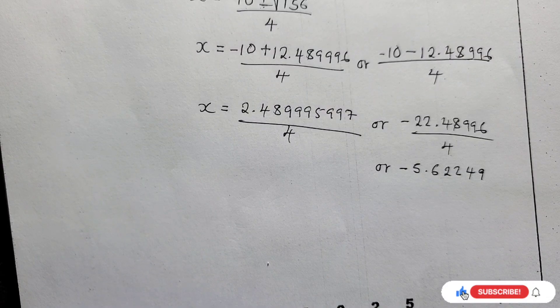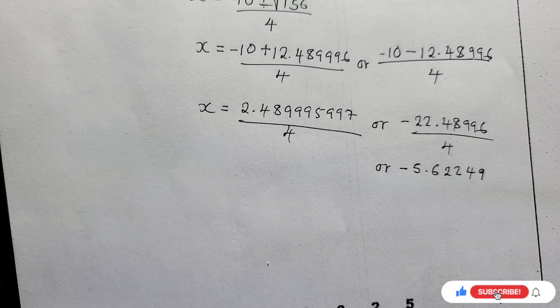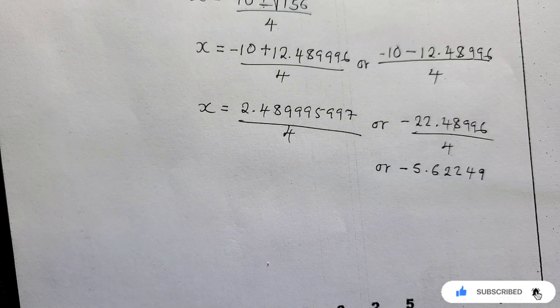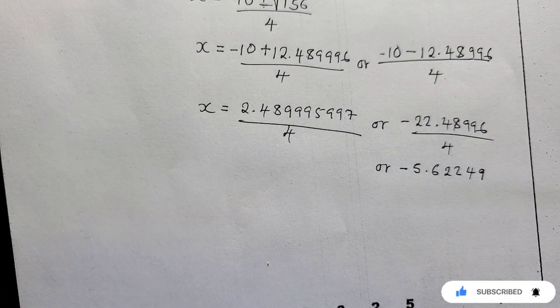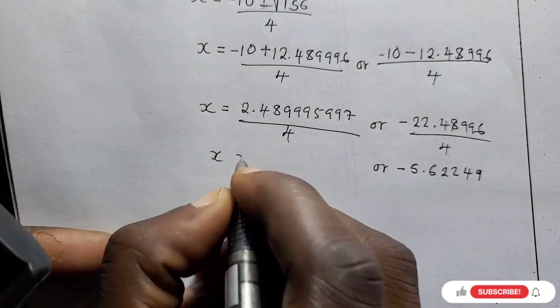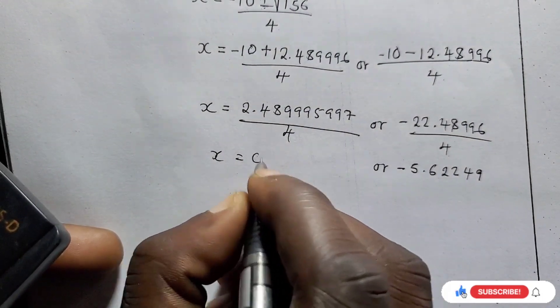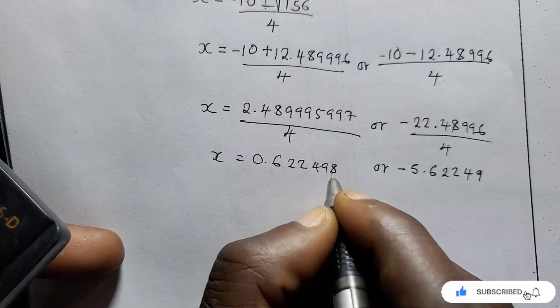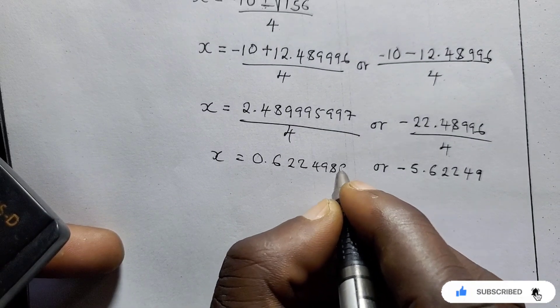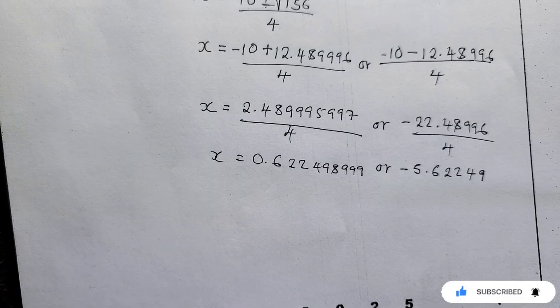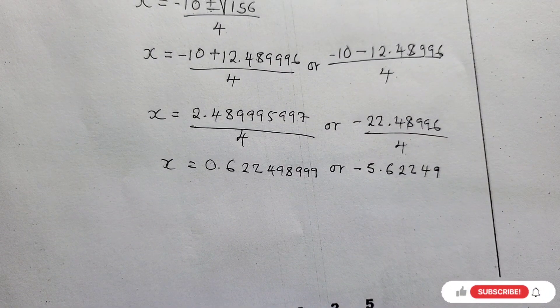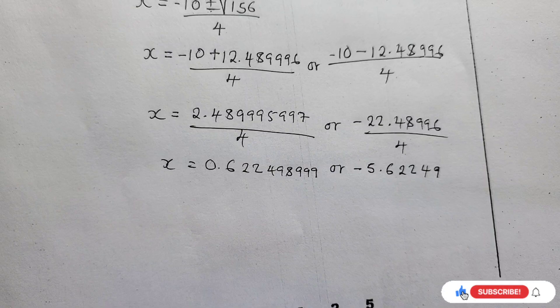Let's come to this. 2.4899959997 divided by 4. So this is giving me, so X equals, this is giving me 0.62249899999. Then the degree of accuracy. We are told to leave our answer correct to how many decimal places? 2.